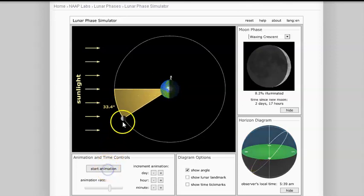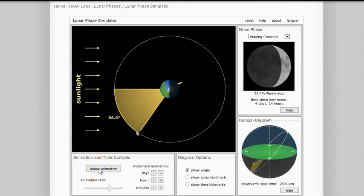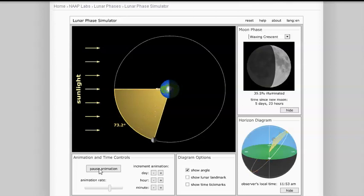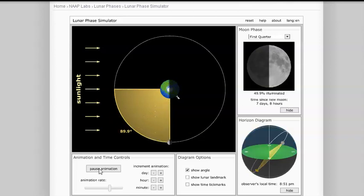Then as the angle changes, remember we always go counterclockwise. As the angle changes, we're going to go through waxing crescent. From here to here, it takes about a week. Remember that a quarter of a circle is about 90 degrees. I didn't stop it quite right, but that's basically a first quarter because you're a quarter of the way through your cycle. That takes about seven or eight days from new to first quarter.